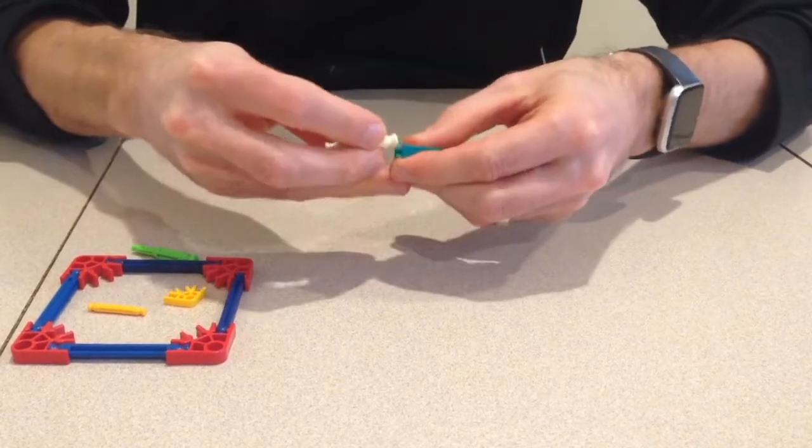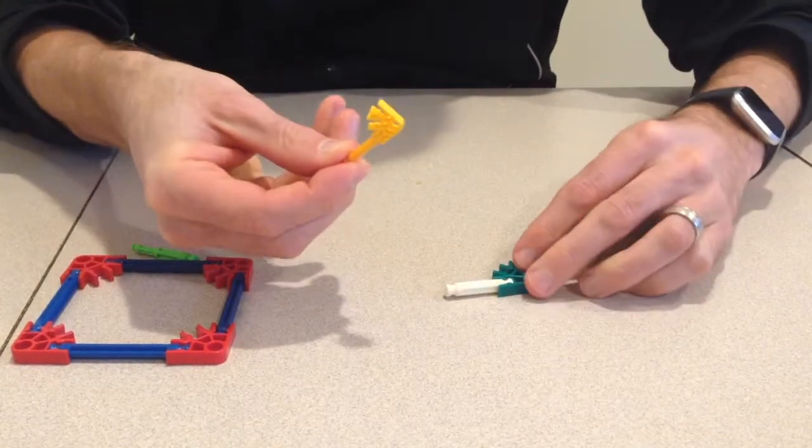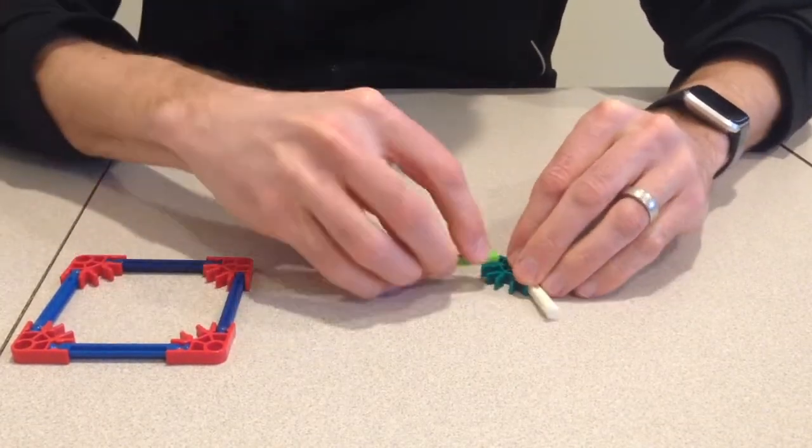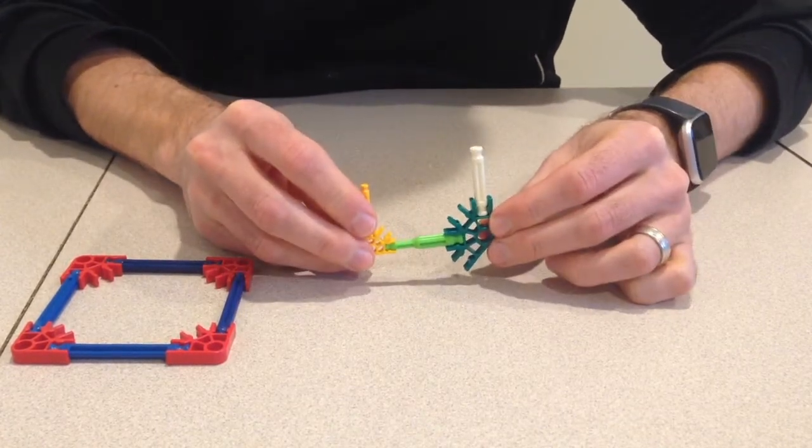K'nex pieces just snap together. They come in regular and micro sizes. You do need adapters to hook the regular pieces and micro pieces together.